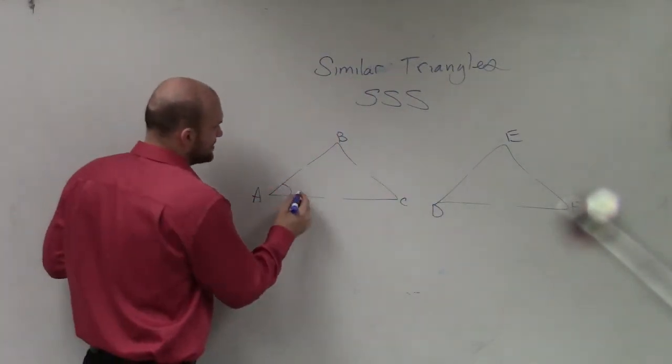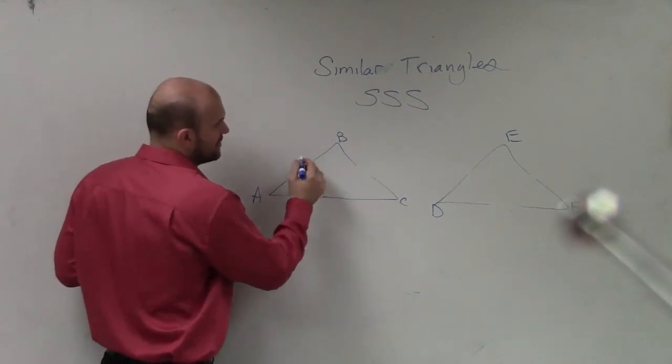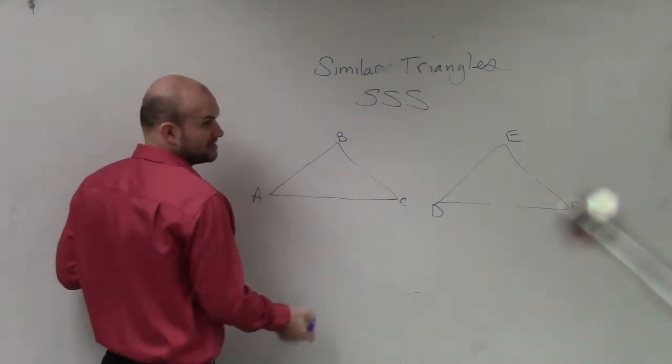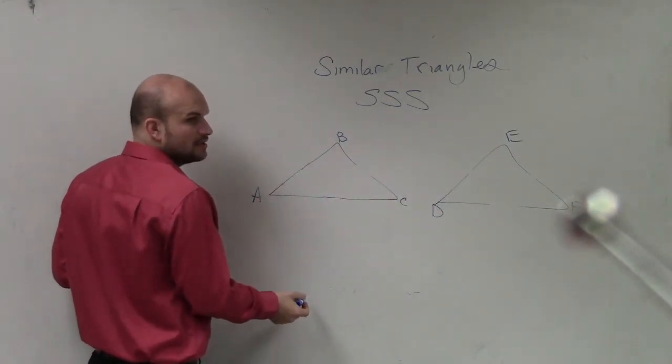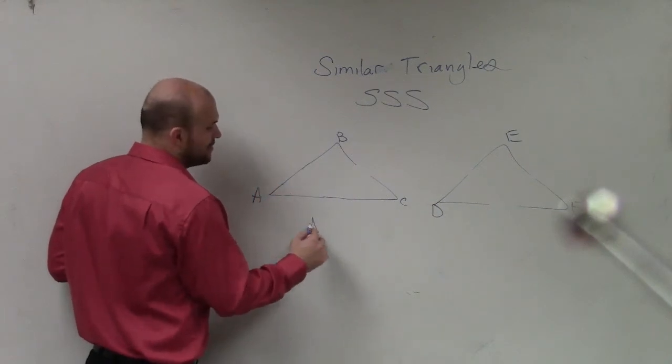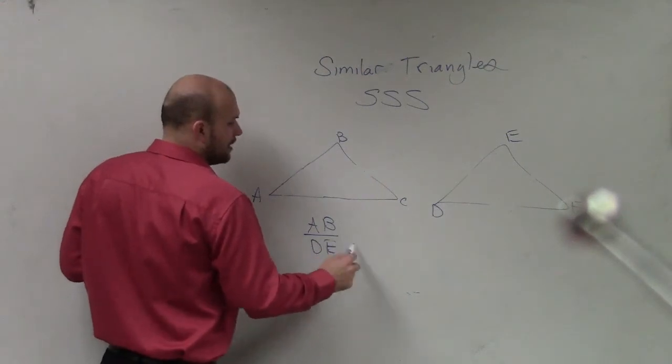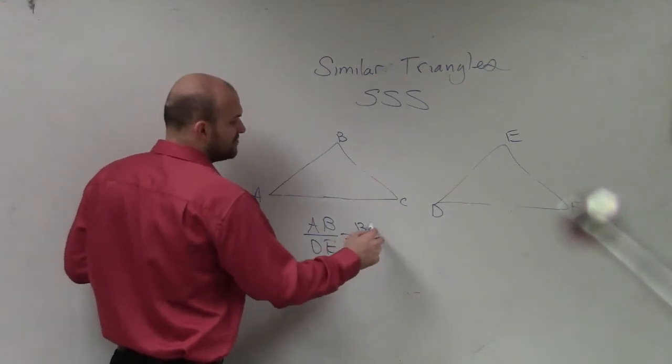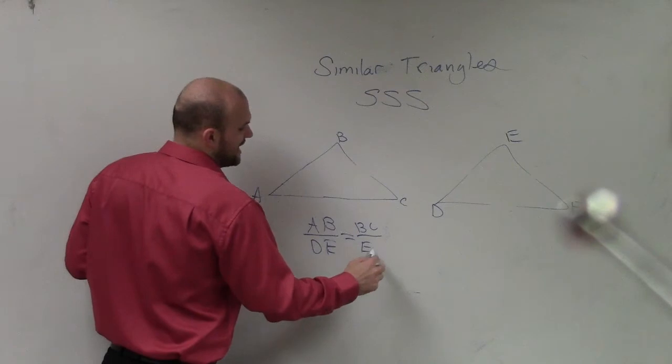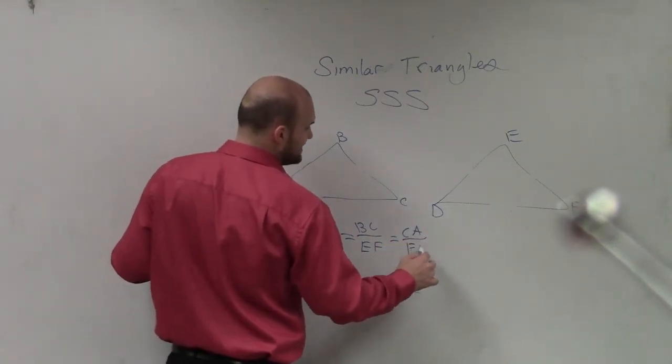So what I'm trying to say is, you know that this side length is proportionate to that side length. So what I could do here is I could write a proportion. If the proportion of AB to DE was congruent to the proportion of BC to EF, which was equal to the proportion of CA over FD.